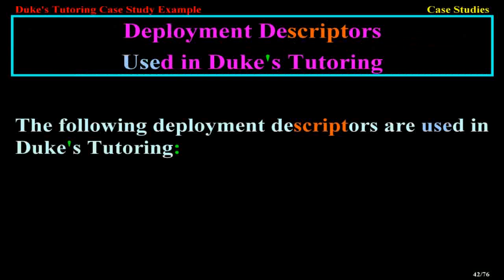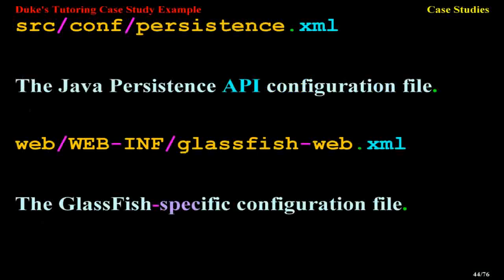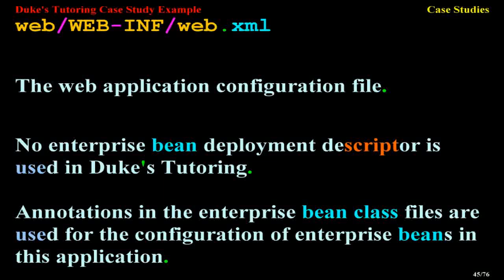The following deployment descriptors are used in Duke's Tutoring: src/conf/beans.xml (an empty deployment descriptor used to enable the CDI runtime), web/WEB-INF/faces-config.xml (the Java Server Faces configuration file), src/conf/persistence.xml (the Java Persistence API configuration file), web/WEB-INF/glassfish-web.xml (the GlassFish-specific configuration file), and web/WEB-INF/web.xml (the web application configuration file). No enterprise bean deployment descriptor is used in Duke's Tutoring; annotations in the enterprise bean class files are used for the configuration of enterprise beans in this application.